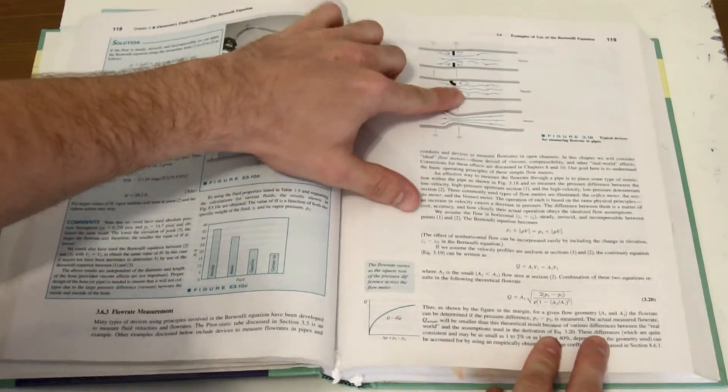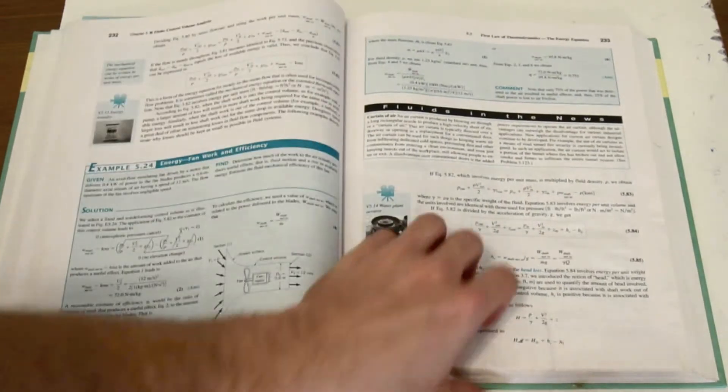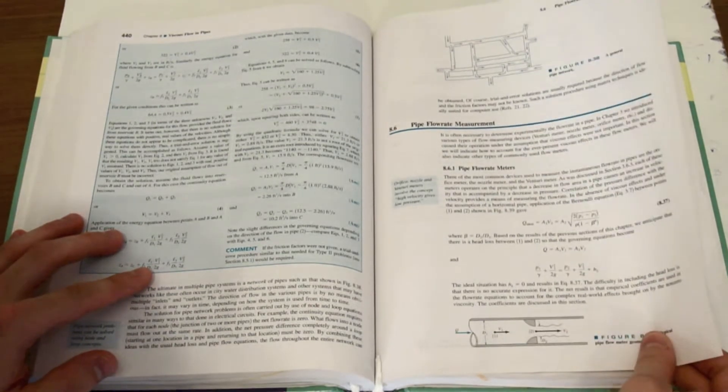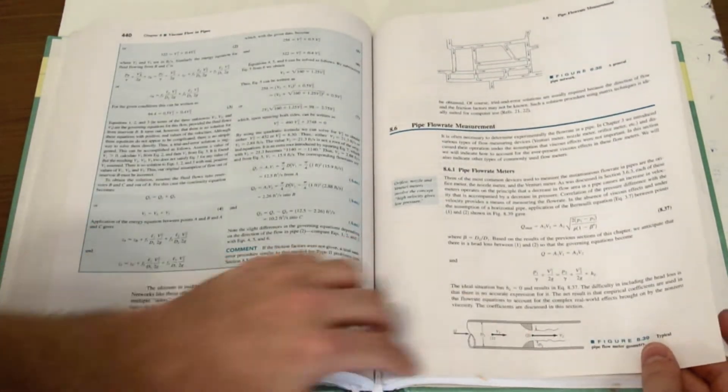You can also see that circular flow is occurring up top and you're getting turbulent flows. If I go a little later in the book we find a whole chapter on just pipe flow measurement and you see once again a constriction here.